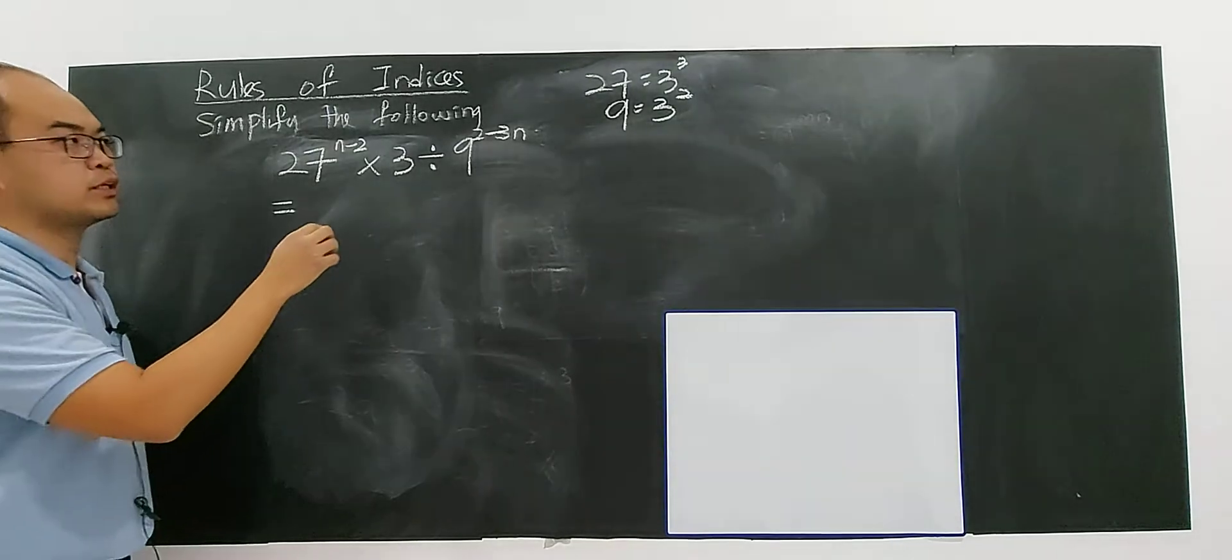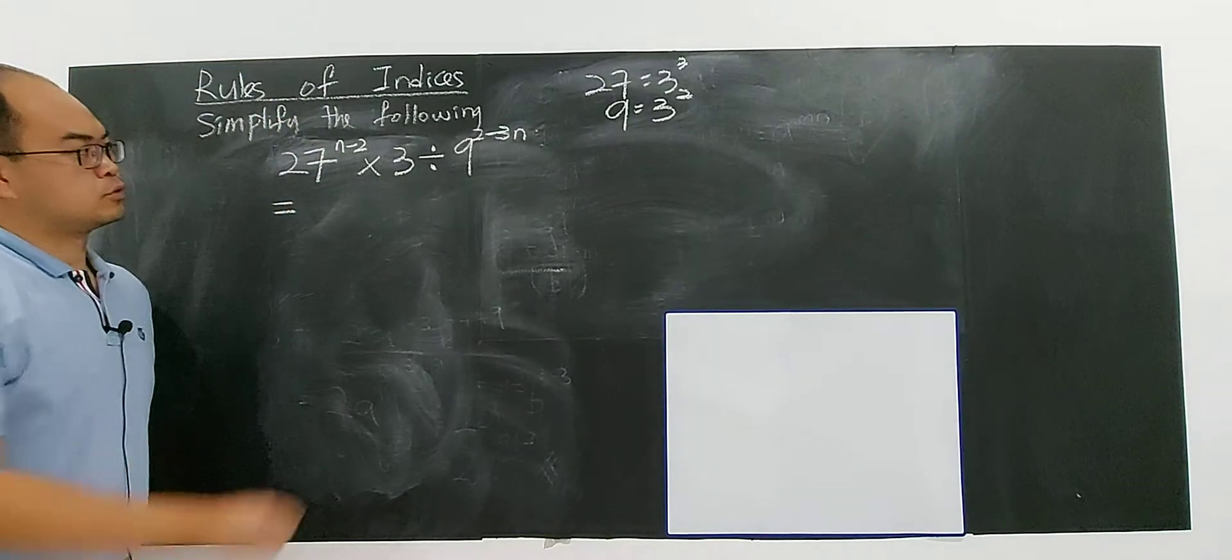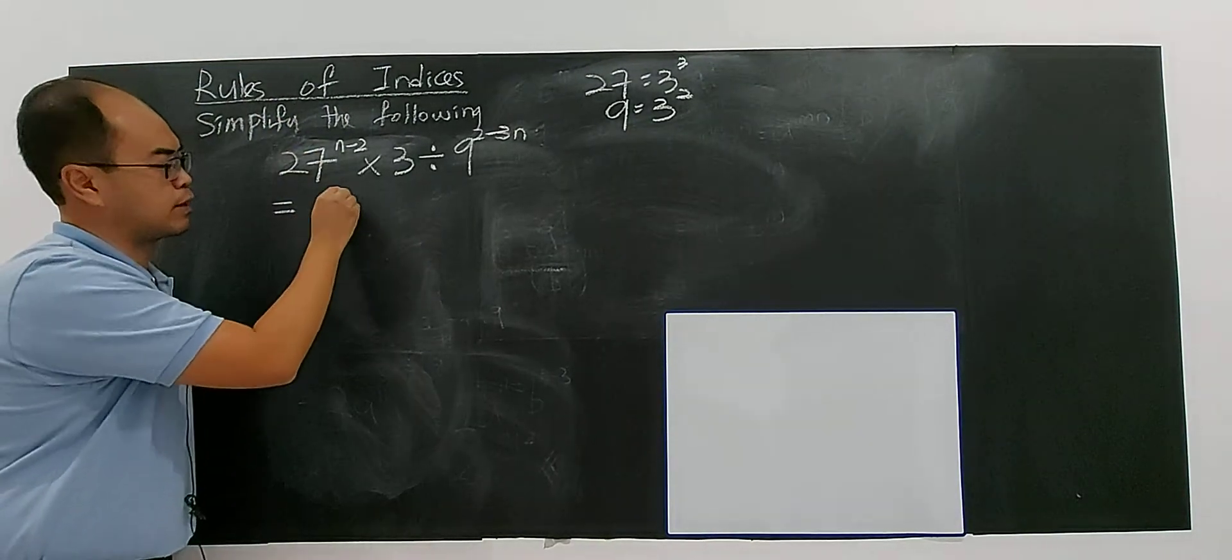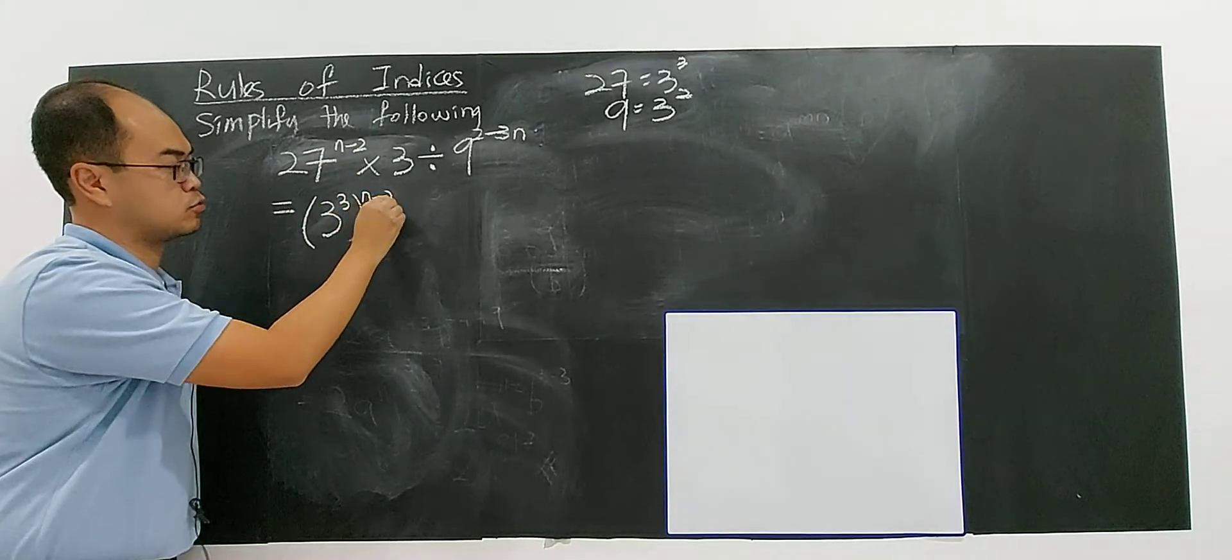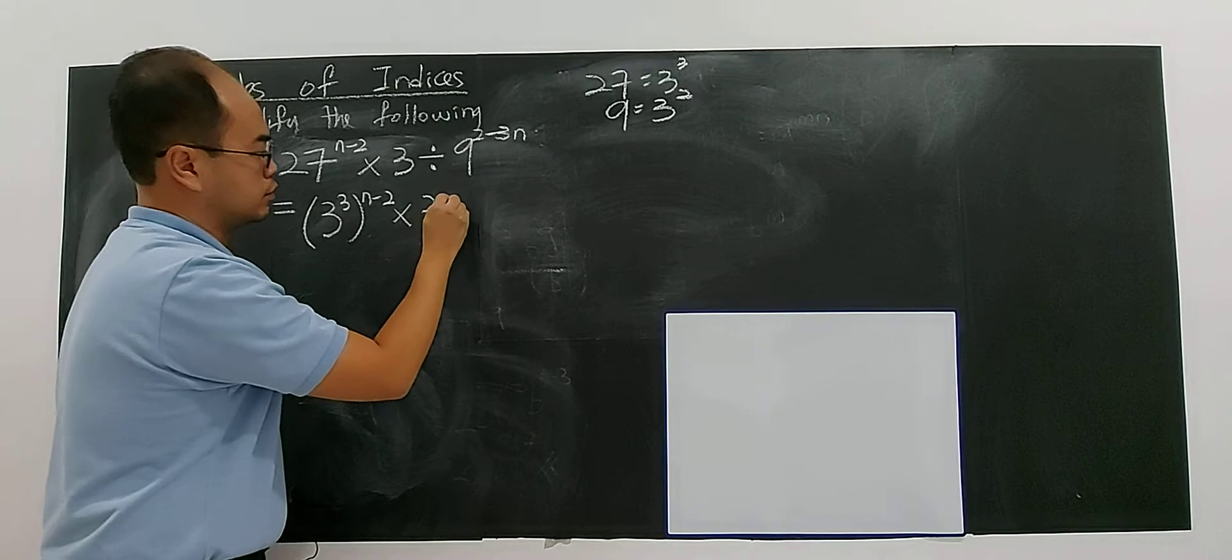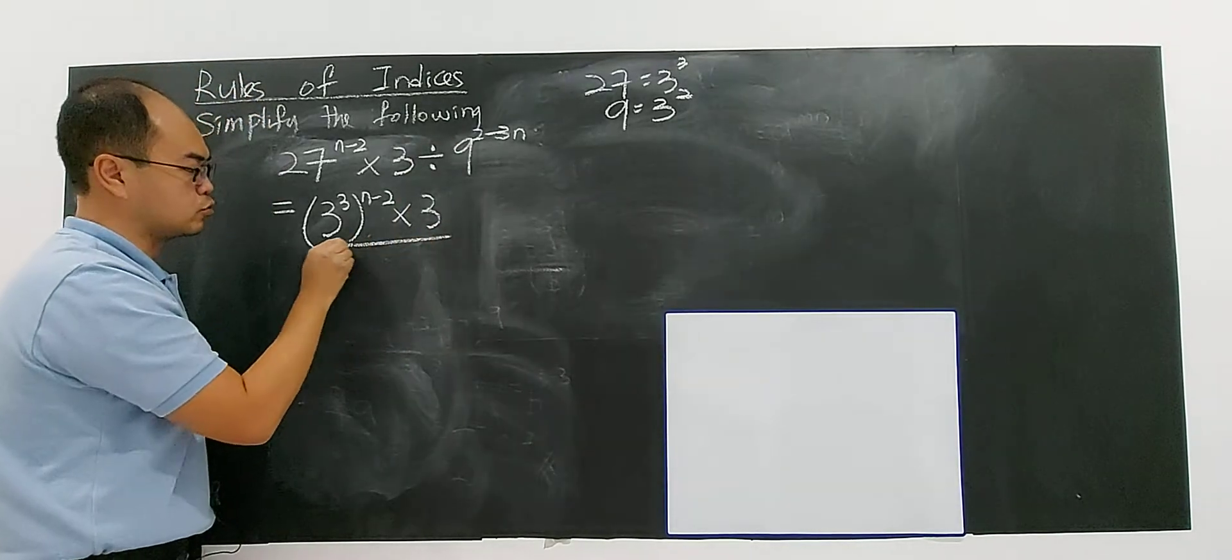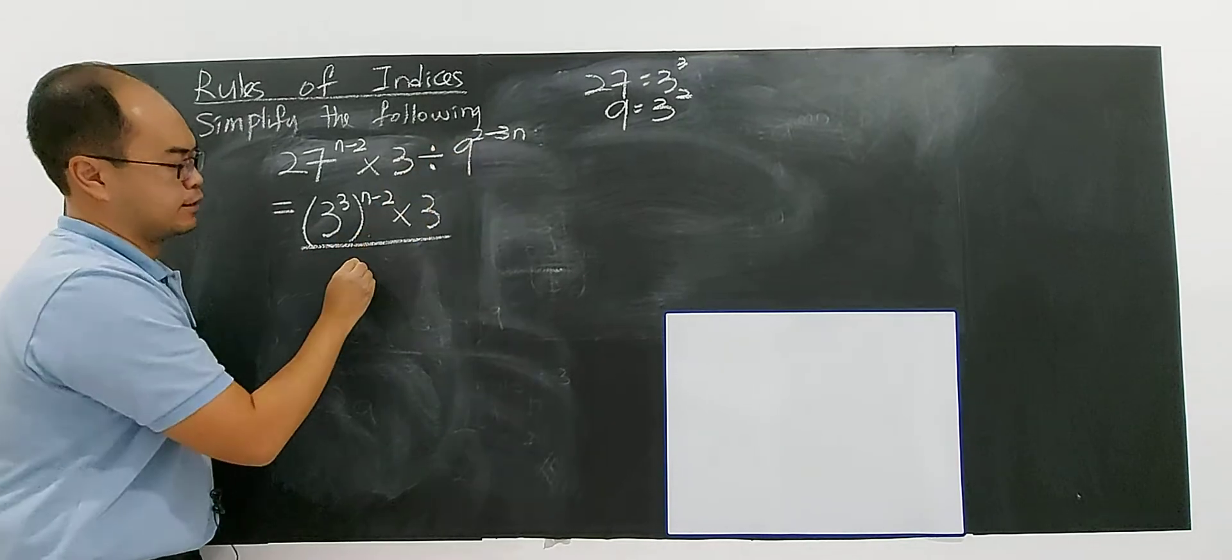So you can convert everything to the same base. This type of question, you need to make sure you know how to deal with the base. So now 27, you have 3 to the power of 3, full bracket, and you have n minus 2.